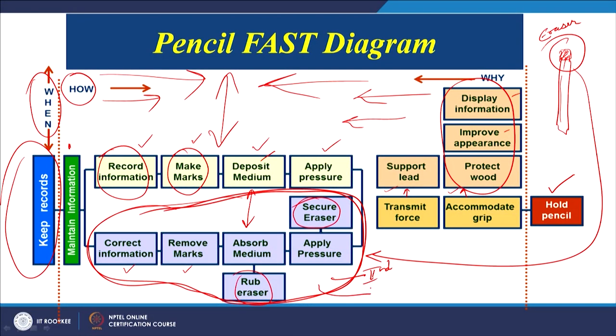So here we can see how why and how-type questions help us, and also that a multi-function product can be represented in a FAST diagram. The second color represents the eraser's functions: secure eraser, apply pressure, absorb medium, remove marks, and correct information — while the light yellow background boxes represent the basic functions for the lead pencil. This is another example of a FAST diagram.